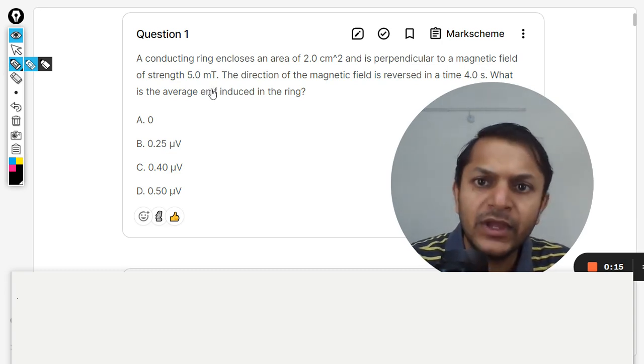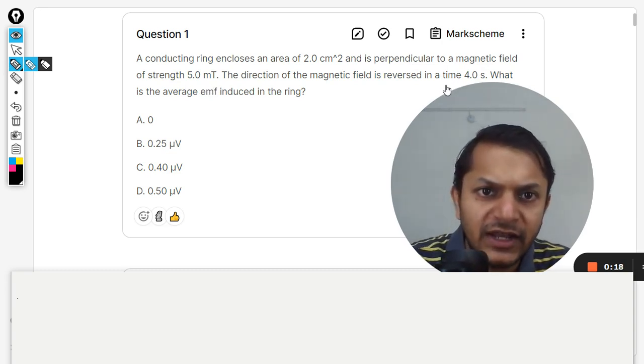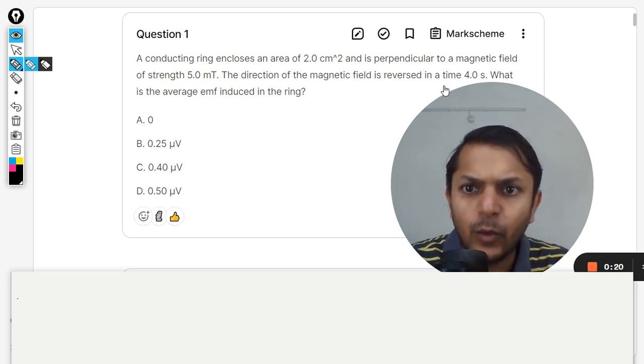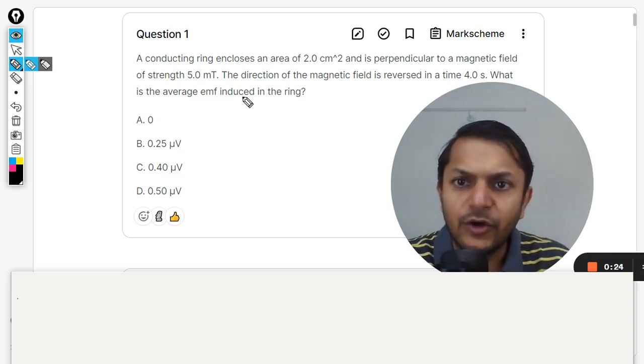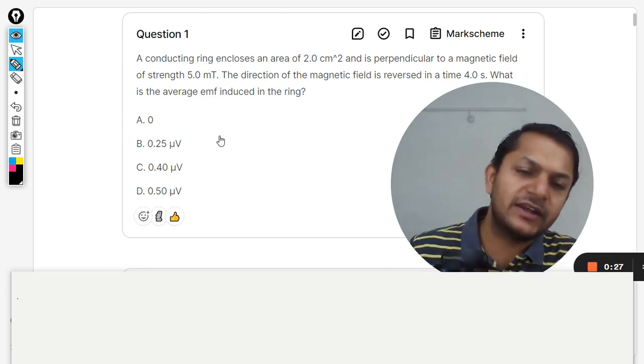The direction of the magnetic field is reversed in a time of 4 seconds. What is the average emf induced in the ring? So this is the question and we want to find the emf that is induced here.